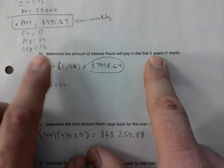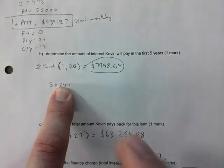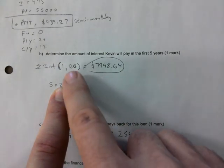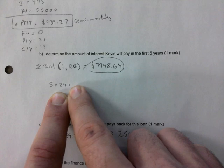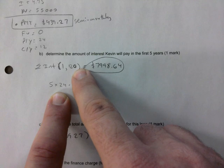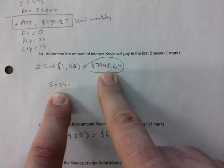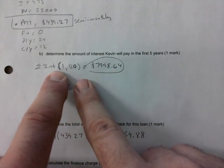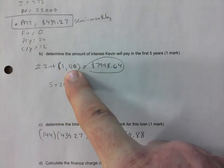So five years in this scenario would be five times 24 semi-monthly payments. So you got to go from the first payment to the 120th payment. This is the equivalent of five years that have gone by. And so that's how much interest.